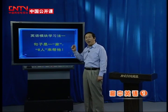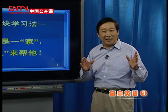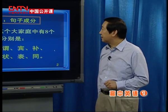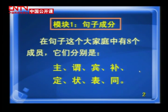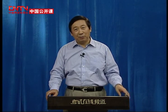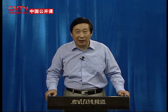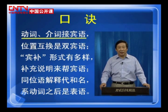今天我们学习模块第一：句子是一家八人。我们把句子成分比作是一个大家庭，这个大家庭中间有八个成员。他们是主、谓、宾、补、定、状、表、同。为了帮助大家记住这八个成员，并且知道他们在句子中间的作用，我们跟大家介绍一个口诀。